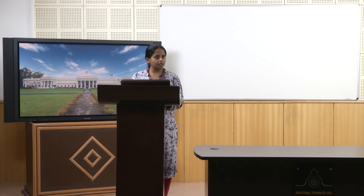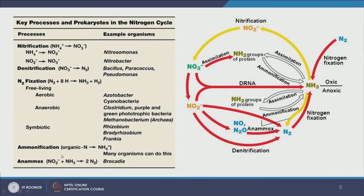Nitrogen fixation converts atmospheric nitrogen into a form that can be assimilated by microbes or plants: N2 + 8H → NH3 + H2. Fixers can be aerobic or anaerobic. Symbiotic nitrogen fixers living in symbiosis with plant roots include Rhizobium, Bradyrhizobium, and Frankia. Ammonification is when organic nitrogen converts into ammonia; many organisms can do this and it is important in wastewater treatment plants. Anammox, a recently discovered phenomenon, is when nitrite reacts with ammonia to directly form nitrogen gas.